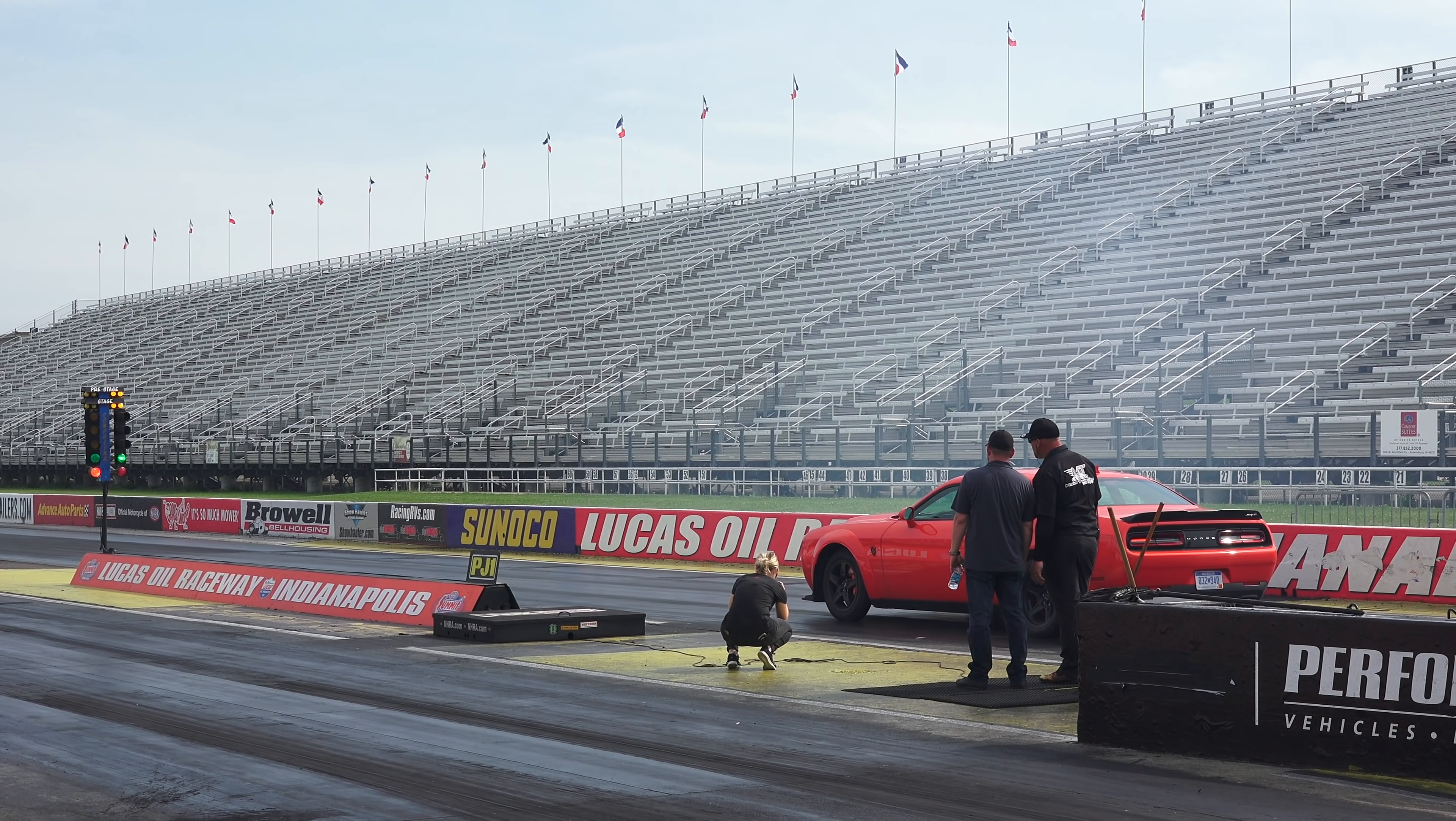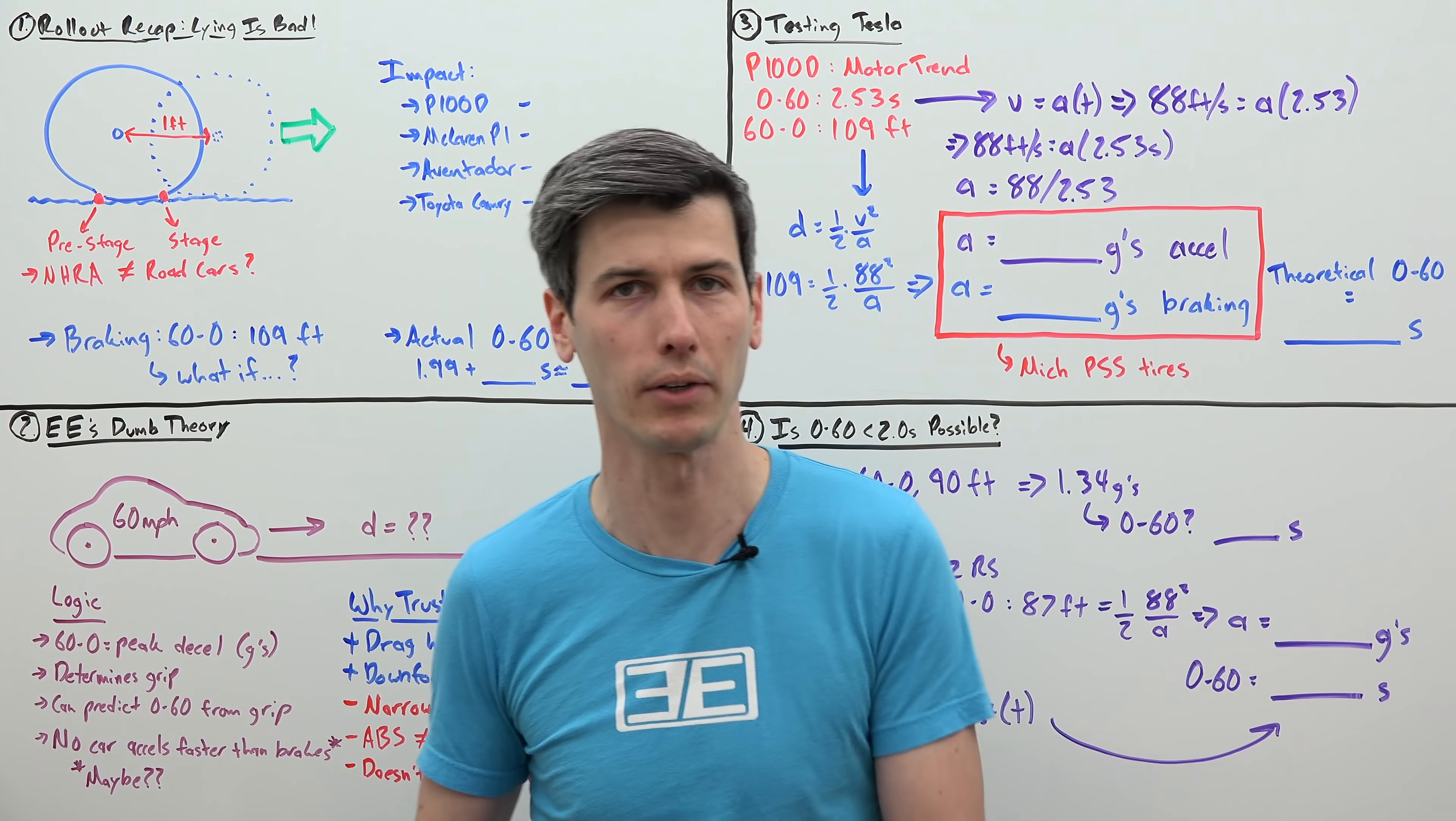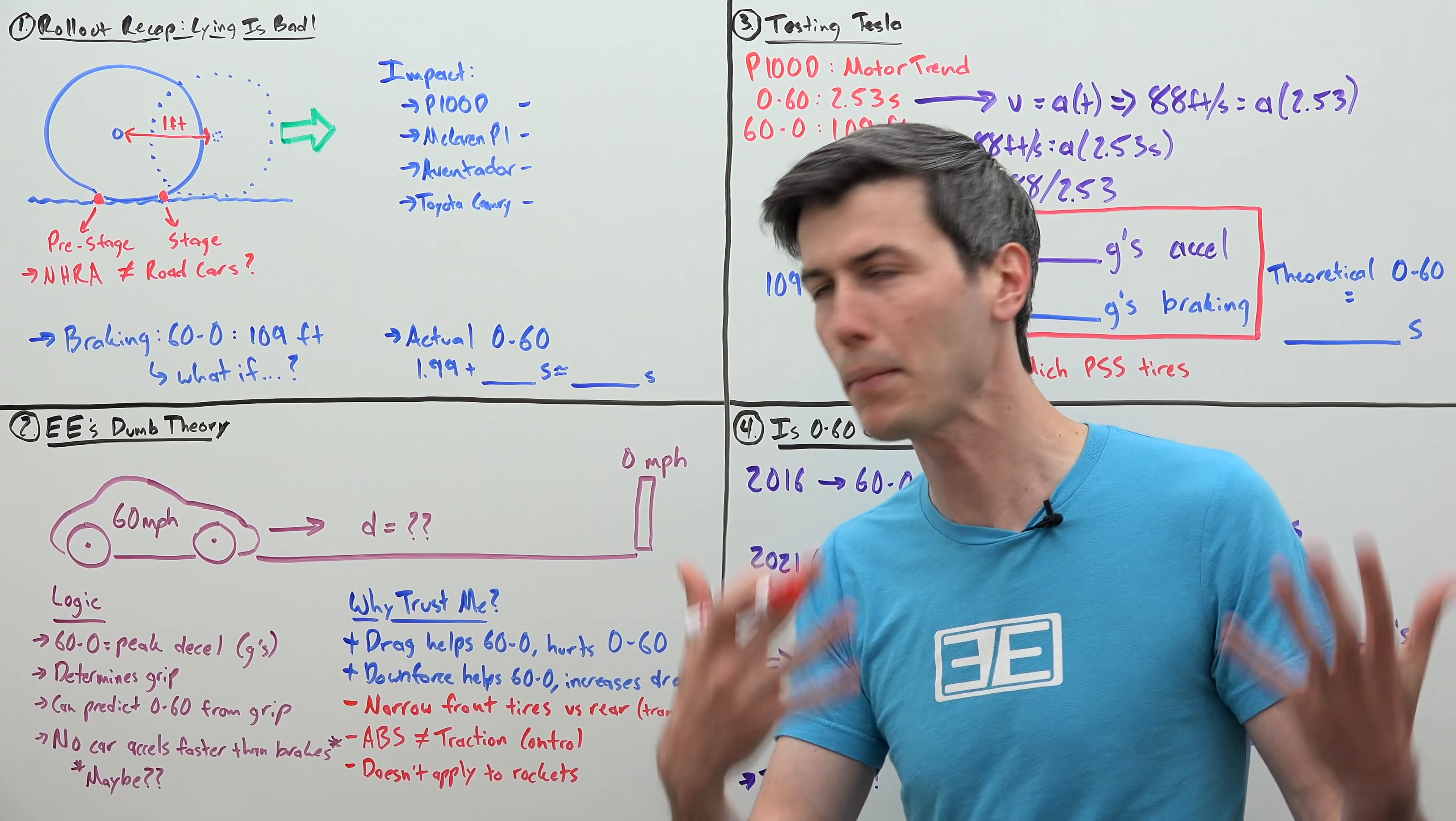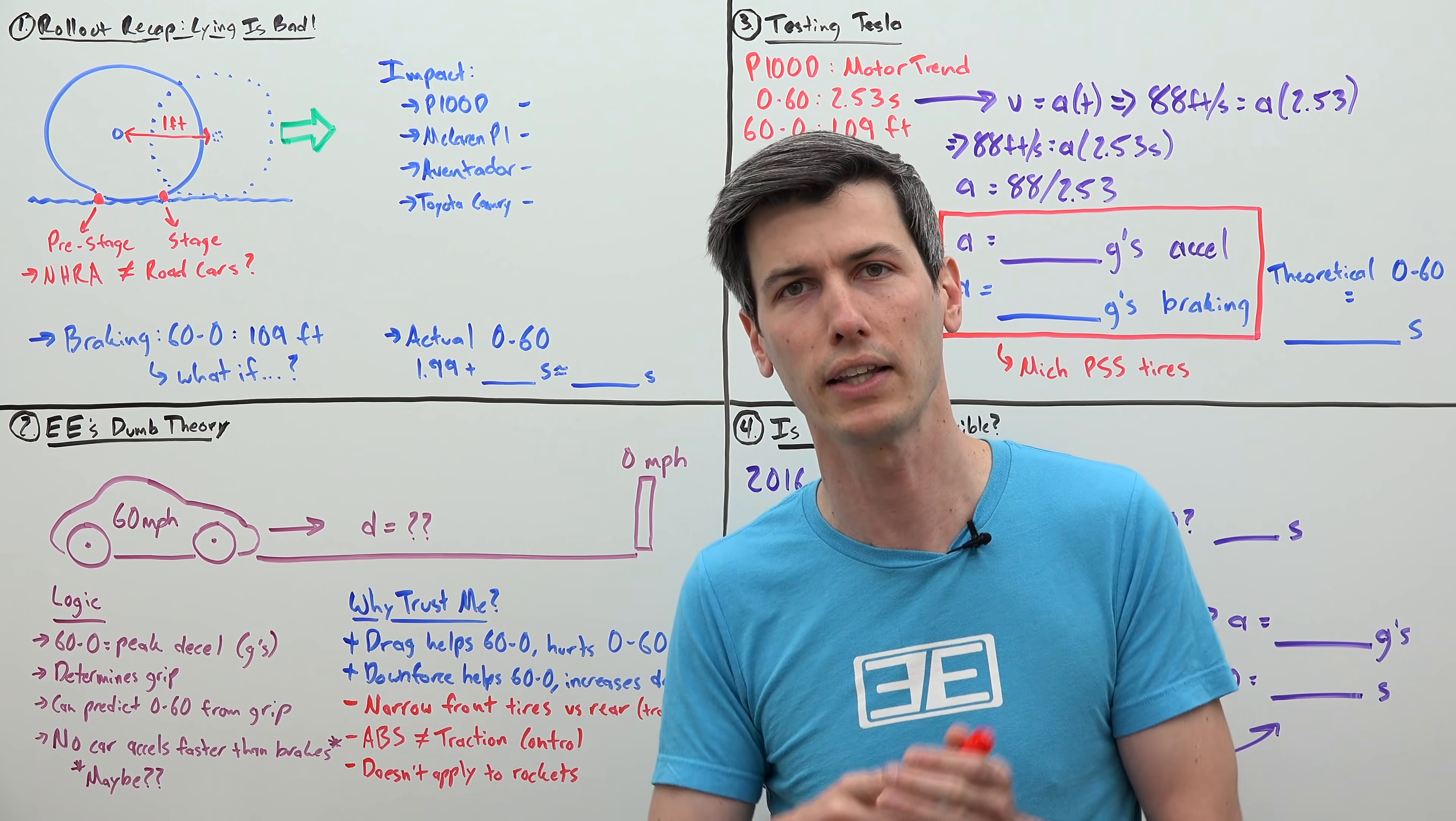Now, the reason Tesla does this is because this is what all the big auto magazines do, and all of them know that this is deceptive. The cool thing about the auto magazines versus Tesla is that they actually openly admit what's going on behind this one foot. So Motor Trend, for example, gives you the data of what happens in that one foot.